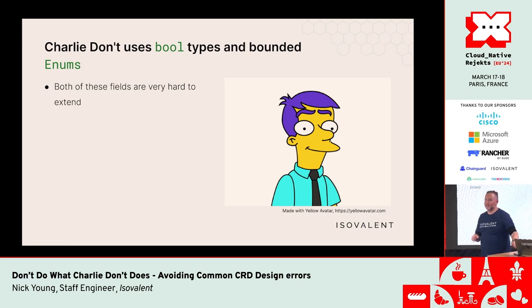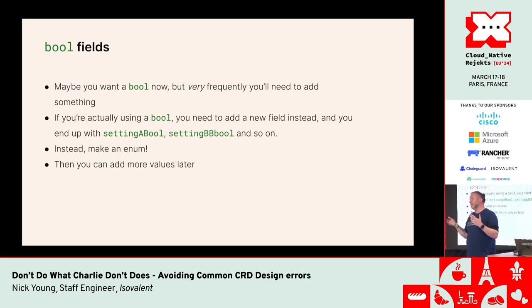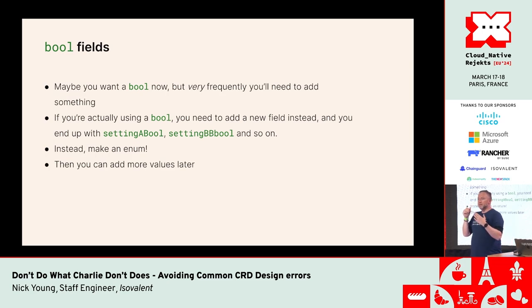Charlie Don't uses bool types and bounded enums — both are very hard to extend. Every time you think you want a bool, you don't. What you actually want is a choice between two options. Almost every time you want a bool inside a CRD, you're saying 'do behavior A true or behavior A false.' But when you're not doing behavior A, you do want behavior B. The much better thing is to have a string field and explicitly say 'behavior A' or 'behavior B.'